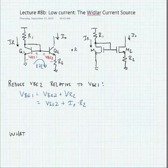We can solve this in terms of VBEs and say that R2 times I_out is equal to VBE1 minus VBE2.